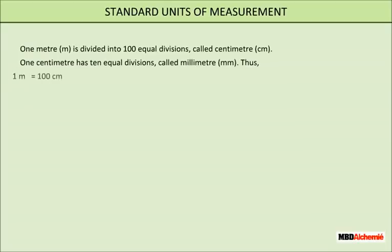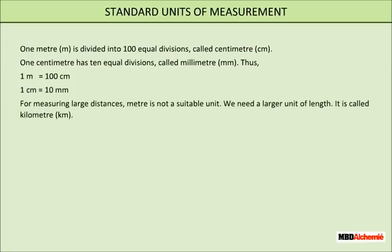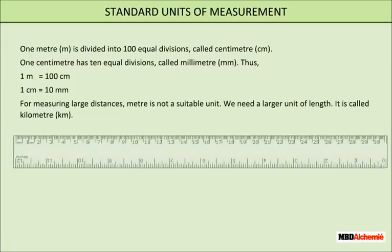One centimeter has 10 equal divisions called millimeters. Thus, 1 meter is equal to 100 centimeters, and 1 centimeter is equal to 10 millimeters. For measuring large distances, larger units of length are used.